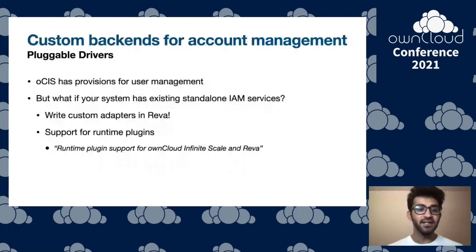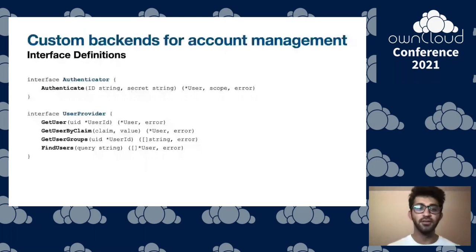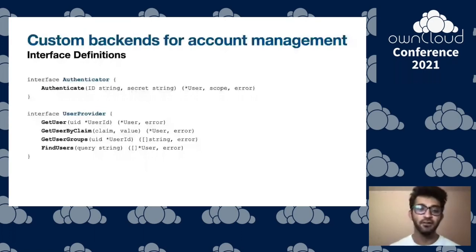These are the interfaces you need to implement to have your own custom solution integrated. For the authenticator, you need an authenticate method which takes an ID and a secret and returns the user object and the scope that object has access to. Similarly, for the user provider, you have methods to get users, search for users, get the groups a user belongs to, and so on. These interfaces are pretty easy to write and really easy to integrate.